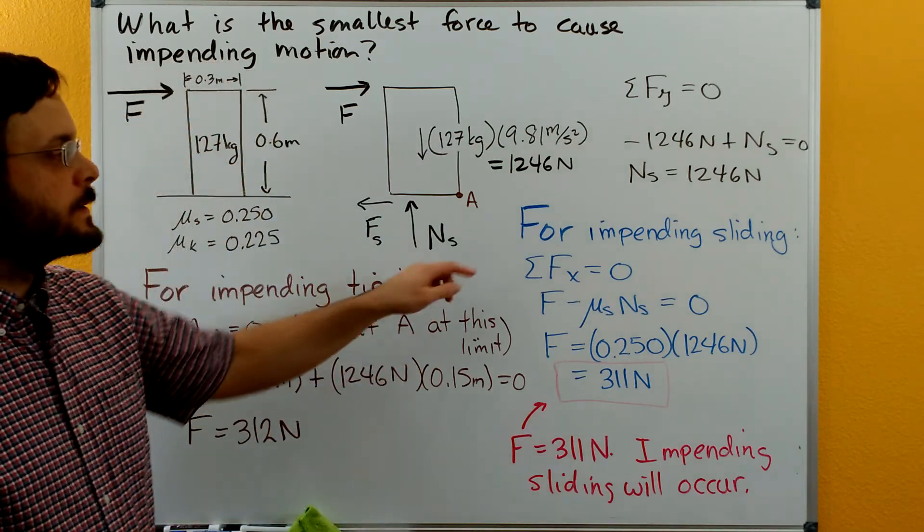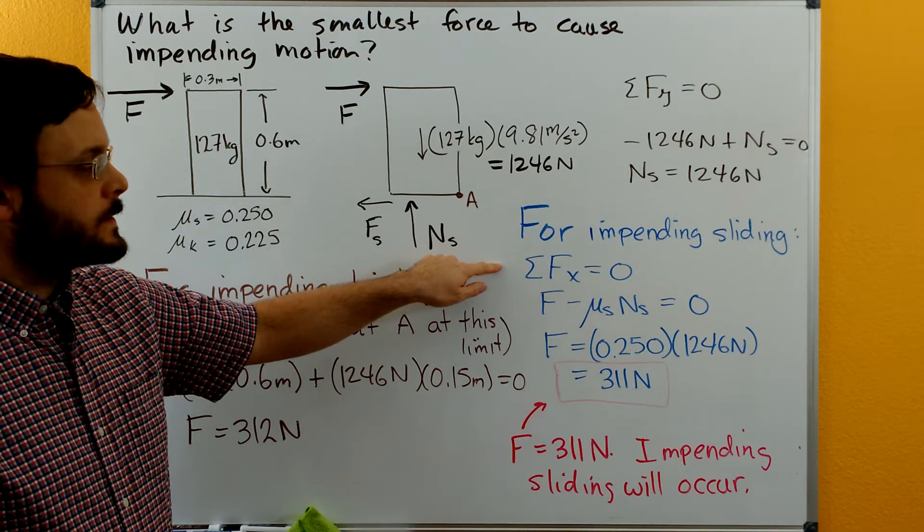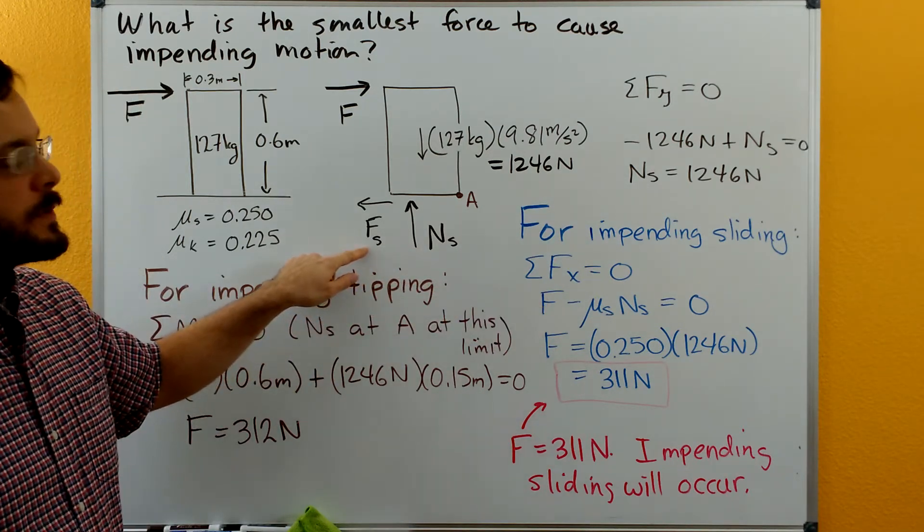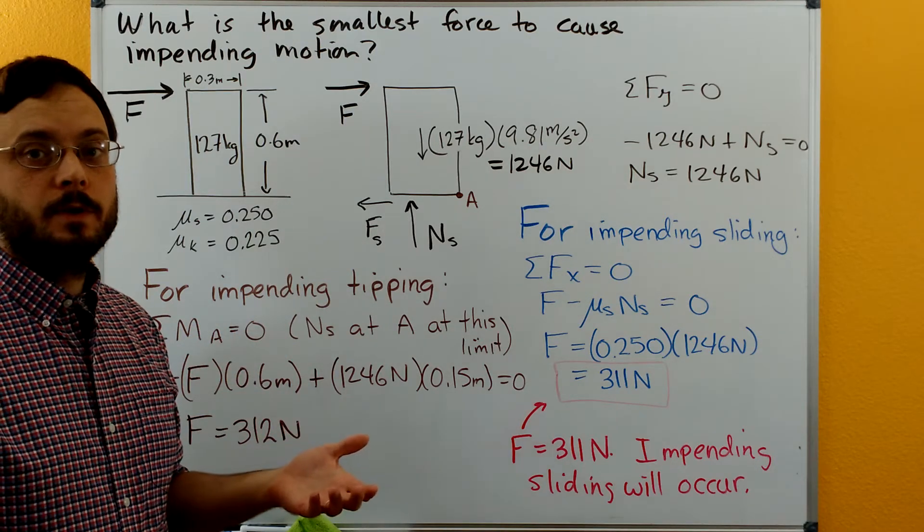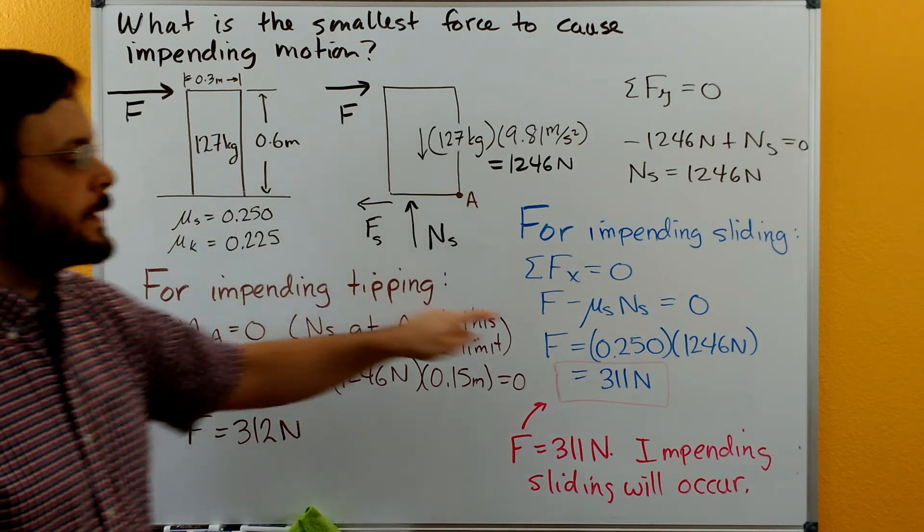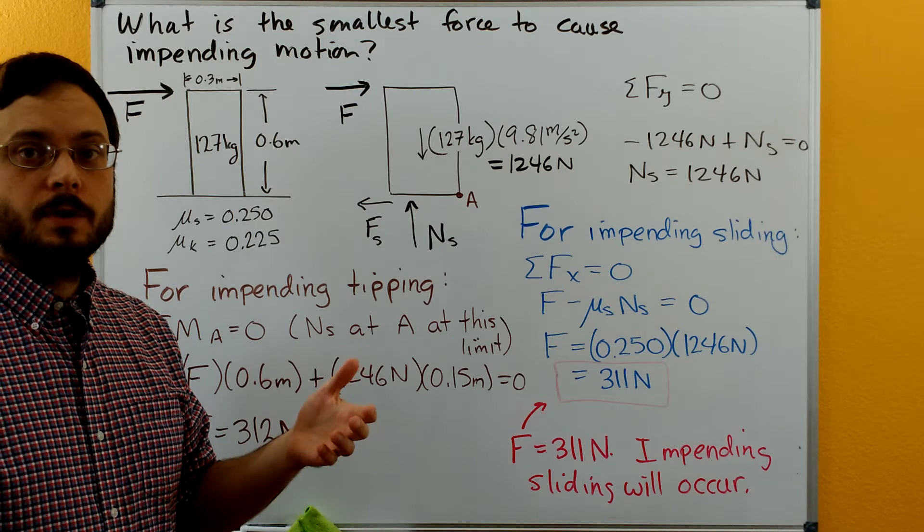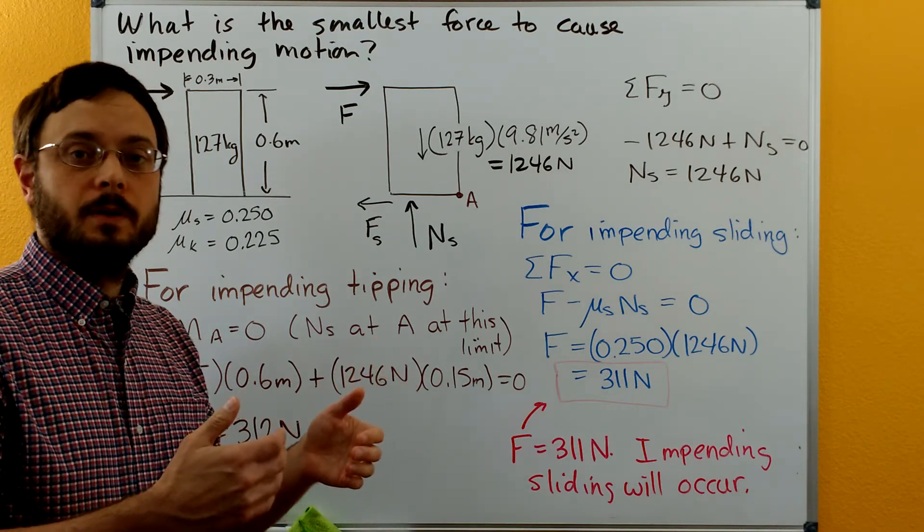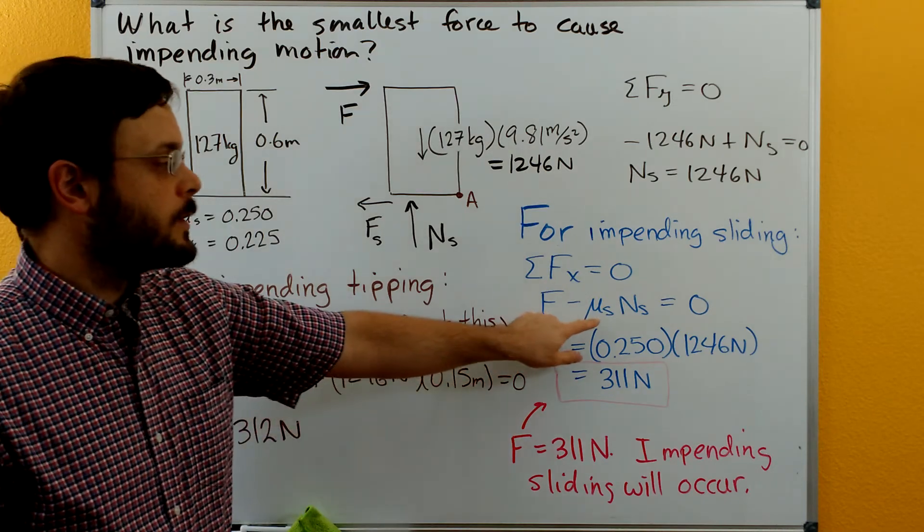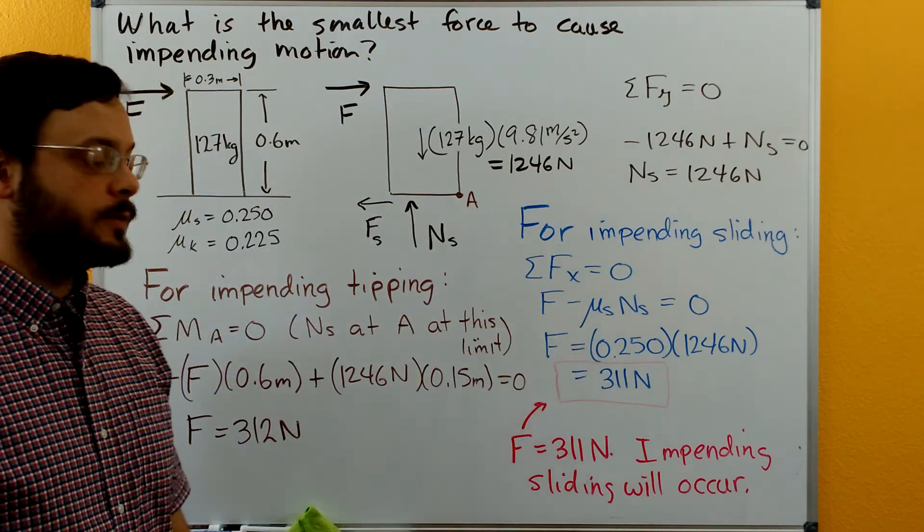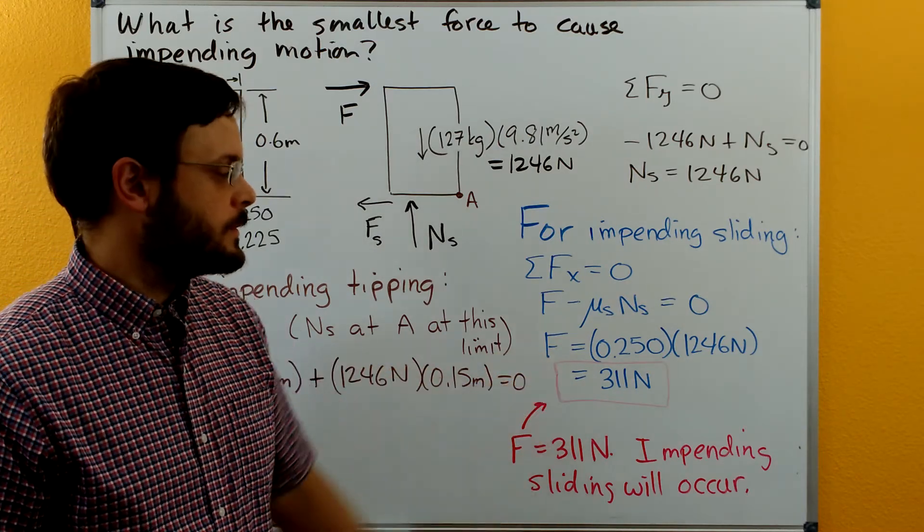And then for impending sliding we can do sum of the forces in the x direction. But in place of the frictional force, now that we're at impending sliding, the frictional force will equal the static coefficient of friction times the normal force. We're not yet in the kinetic regime. We're just looking at this up to impending motion, not past that, not into motion. And that's why we're using the static coefficient of friction. Plugging that in we can now solve for F and we get 311 newtons.